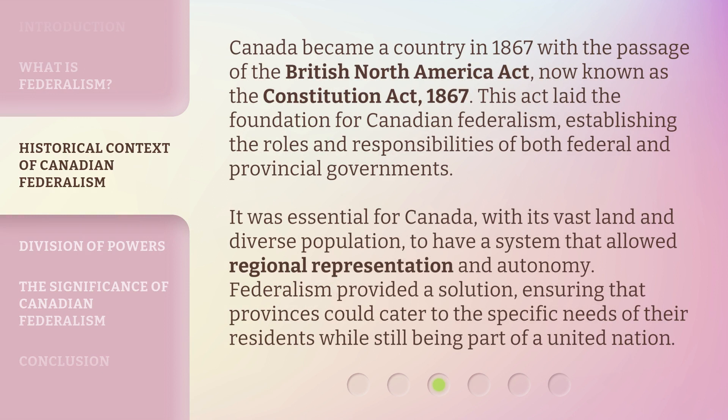Canada became a country in 1867 with the passage of the British North America Act, now known as the Constitution Act, 1867. This act laid the foundation for Canadian federalism, establishing the roles and responsibilities of both federal and provincial governments. It was essential for Canada, with its vast land and diverse population, to have a system that allowed regional representation and autonomy. Federalism provided a solution, ensuring that provinces could cater to the specific needs of their residents while still being part of a united nation.